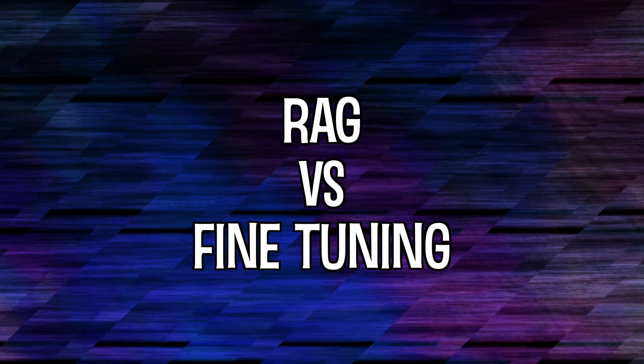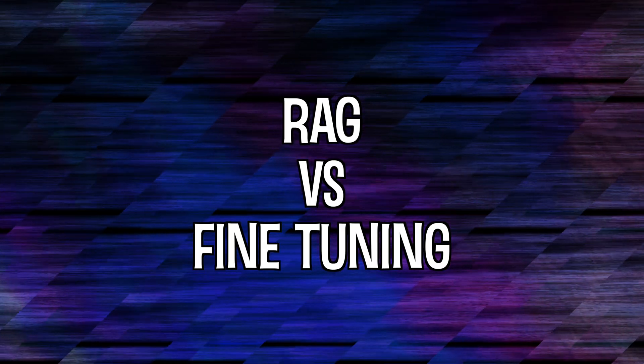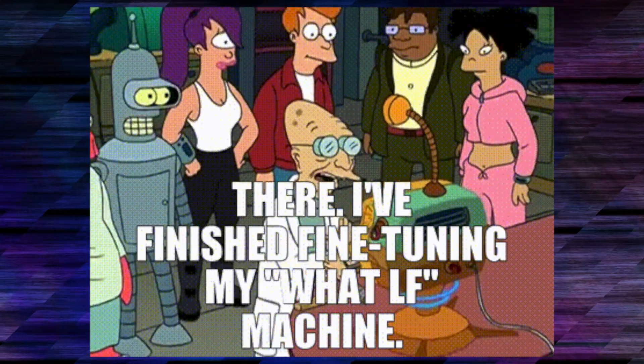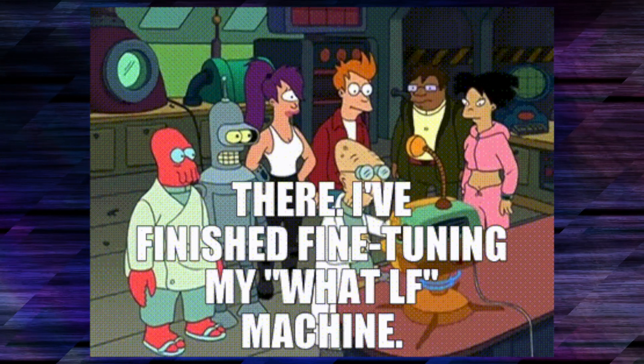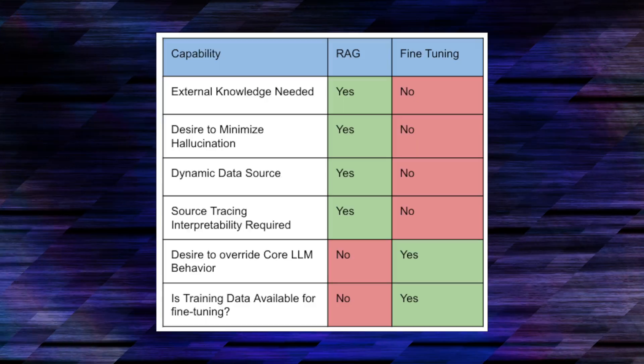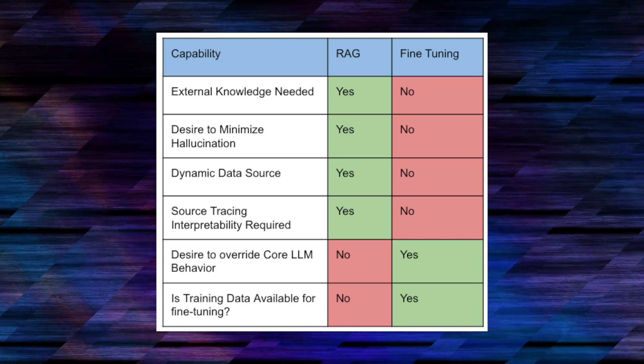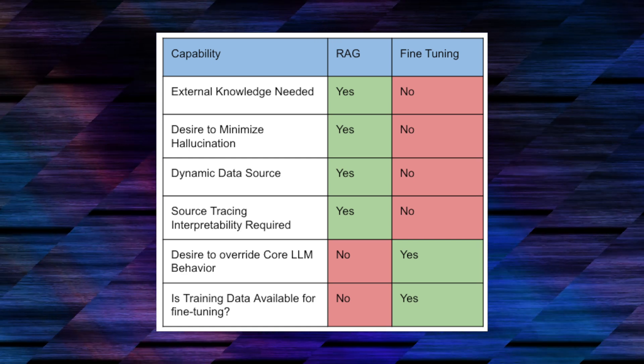This is where RAG comes into play, especially for events or facts beyond the model's last training date. Contrast this with fine-tuning, which optimizes a model on a specific data set. Fine-tuning works well for static large data sets, but falls short with dynamic information or smaller data sets. RAG addresses these limitations by fetching the most current data, ensuring the model's responses are both accurate and up to date.